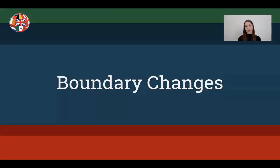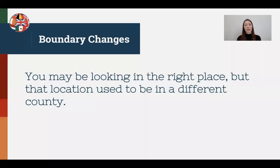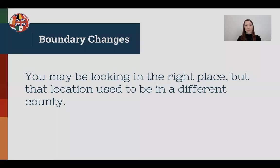Moving on to boundary changes — some things to consider: when was the area settled? When did it officially become a city, county, or state? Is this during the time period my ancestor was there? When did changes take place in jurisdictions? Are there any maps that show the change of borders? You might be looking in the right place, but that location could have been in a different county or even a different state. Checking boundary changes at different time periods can be really enlightening.